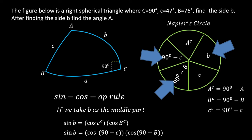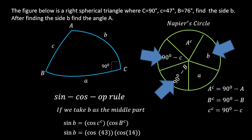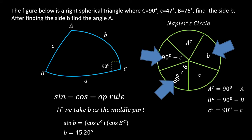Therefore the solution becomes: sin B is equal to cos(90 − c) times cos(90 − B). With c = 47 and B = 76, this simplifies to sin B = cos 43 × cos 14. To find the side B, I apply the inverse sine, giving side B = 45.20 degrees.